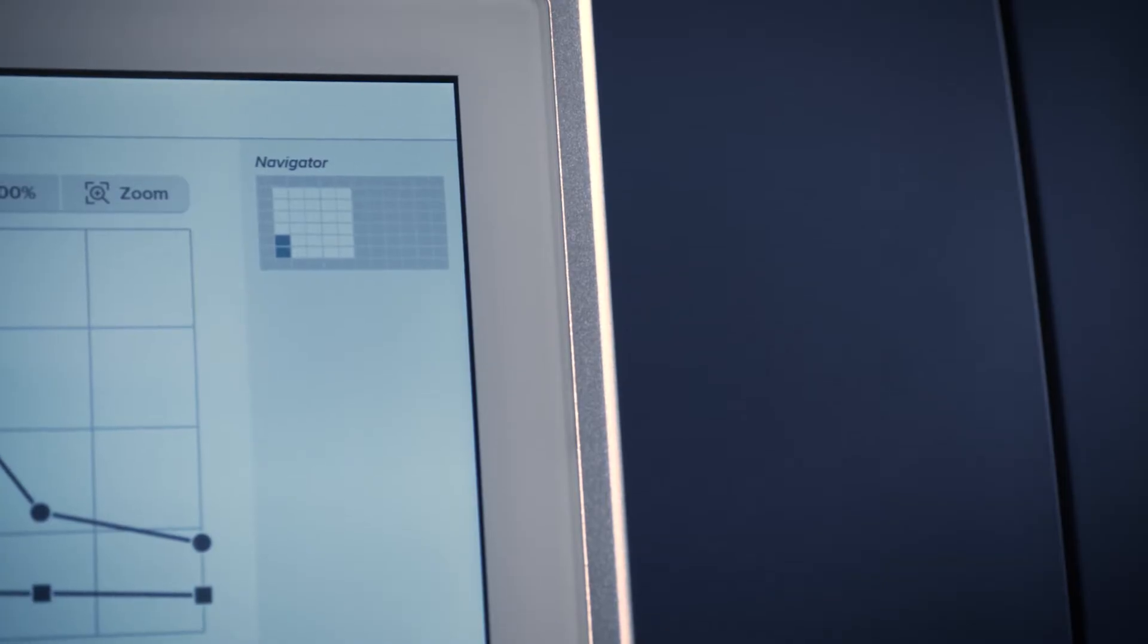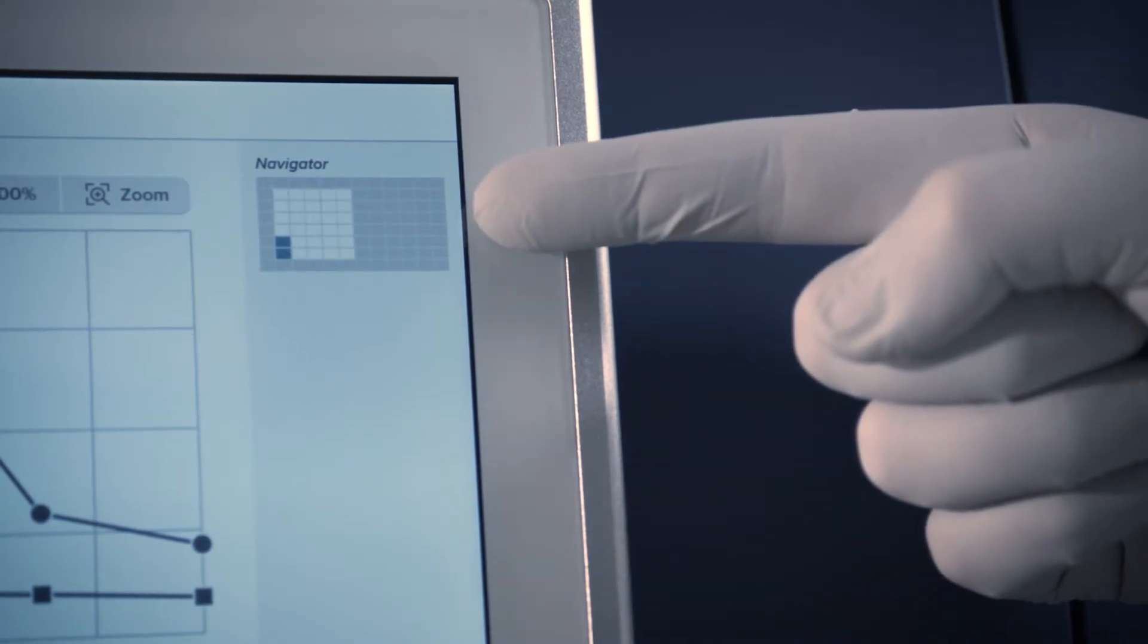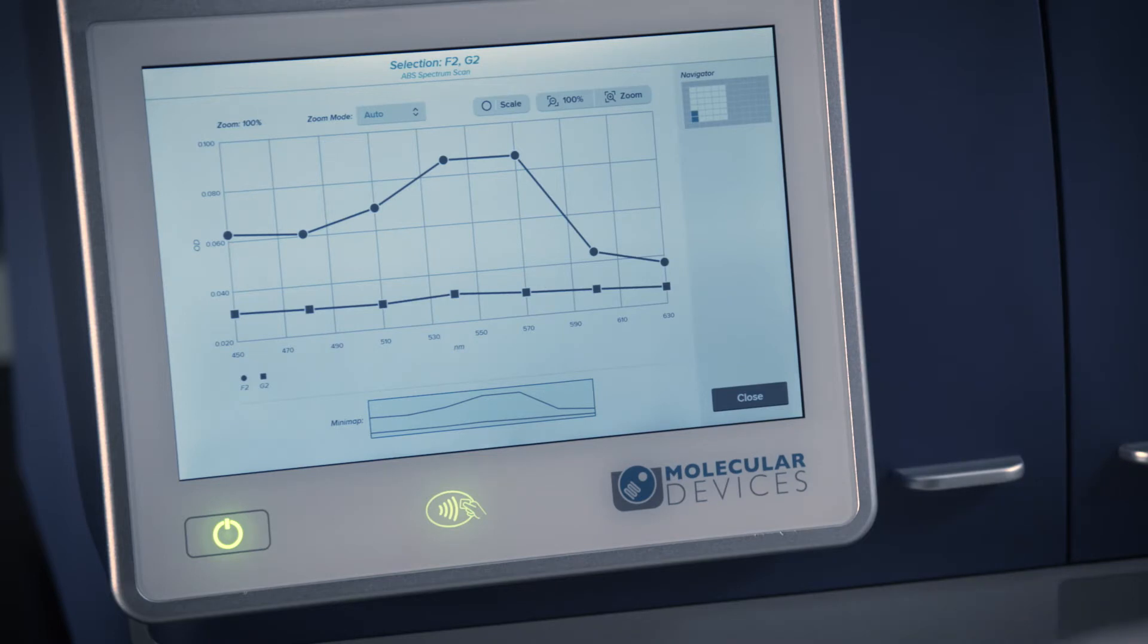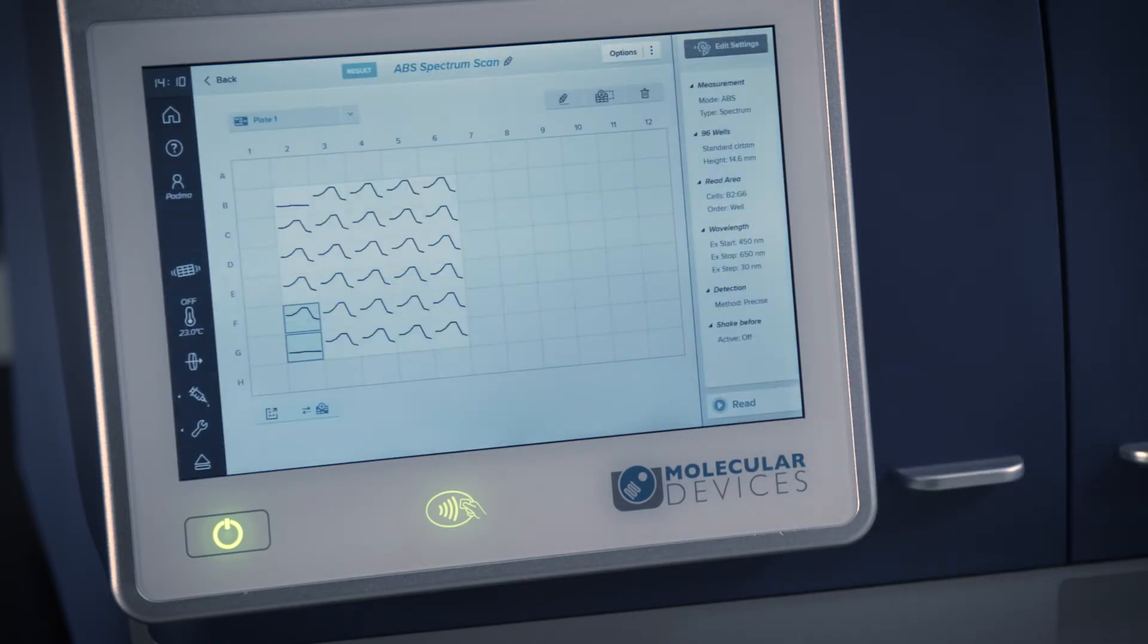The selected well locations will be displayed on the navigator plate map. Touch Close to exit the graph view.